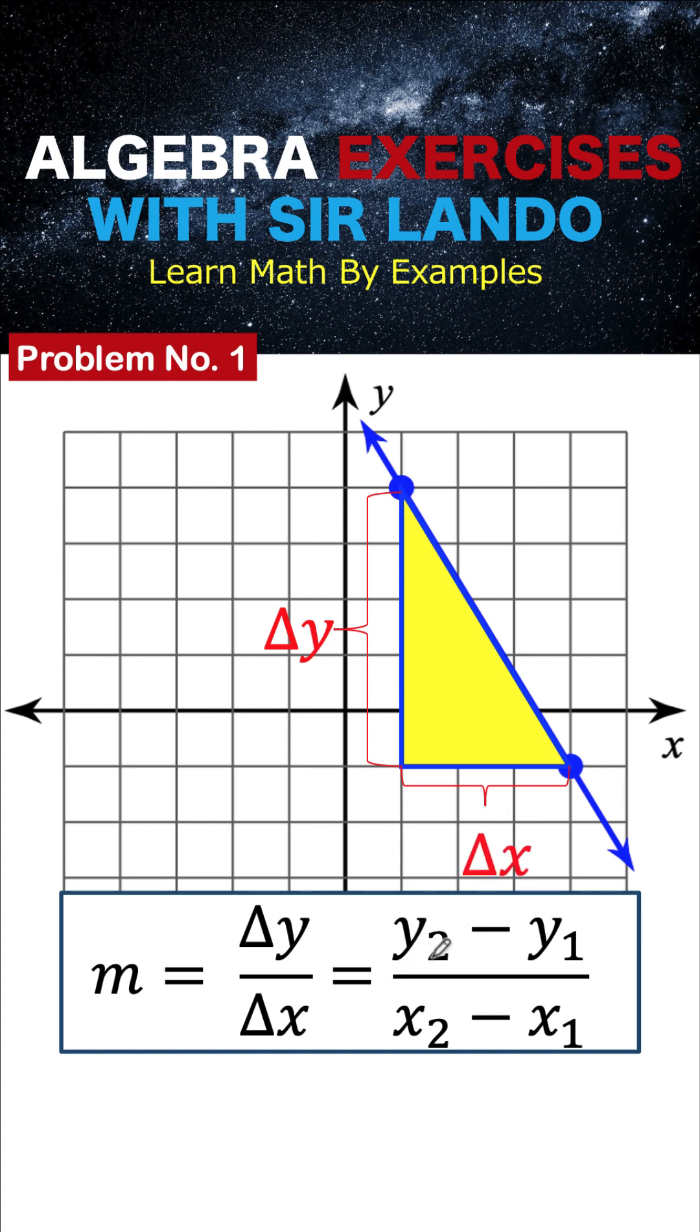Normally we use this formula y sub 2 minus y sub 1 over x sub 2 minus x sub 1 to determine change in y and change in x respectively.